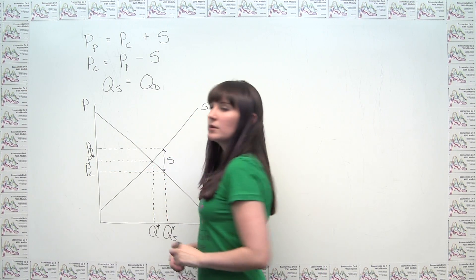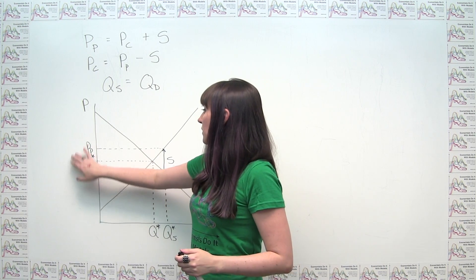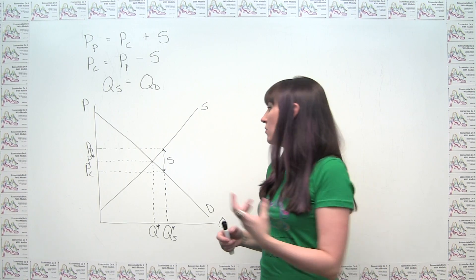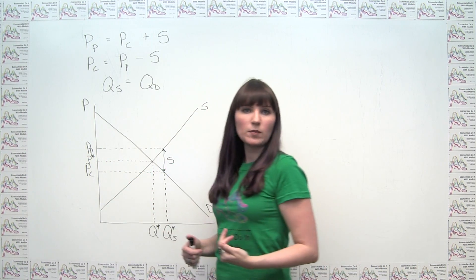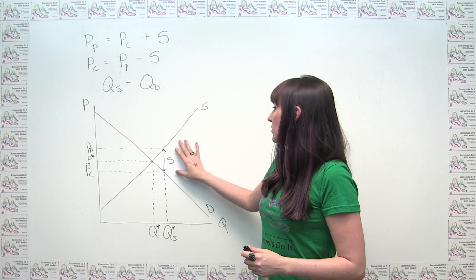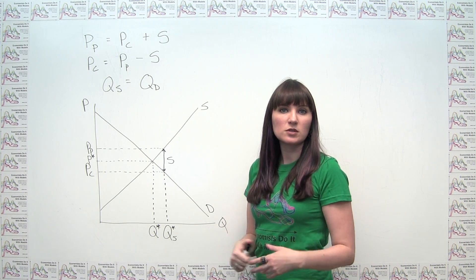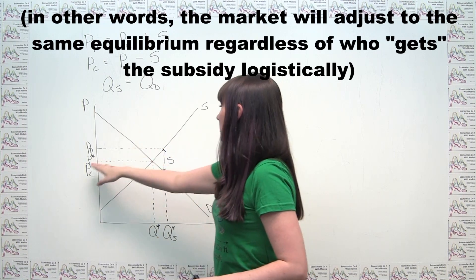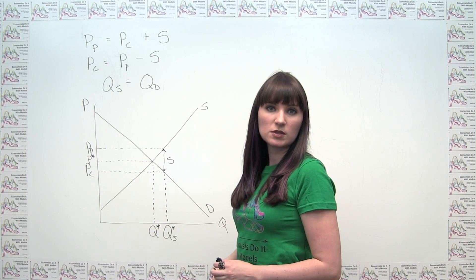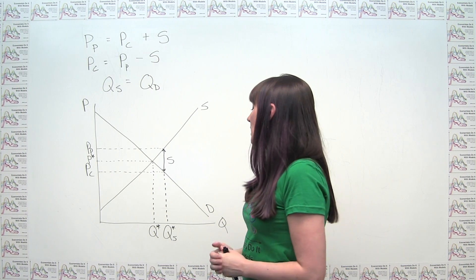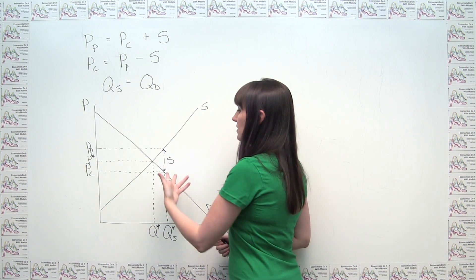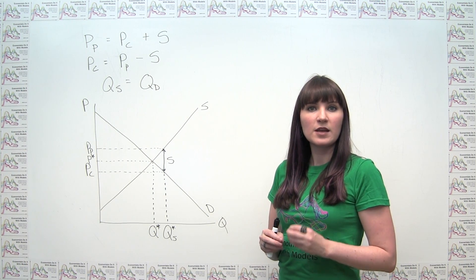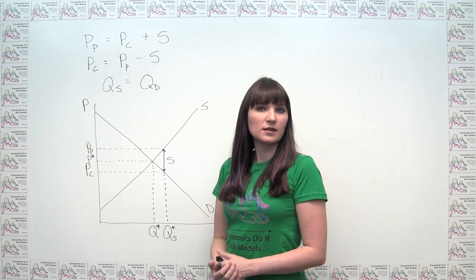That said, a subsidy is similar to a tax in that the producer and the consumer share the impact, or in this case, share the benefits, rather than the benefit only accruing to one party or the other. And that's going to be true regardless of whether the subsidy is given directly to producers or directly to consumers. And you'll note that the way we drew this, it looks like the benefits are evenly shared between producers and consumers, but this need not be the case. And again, like with the tax, the benefits of the subsidy, and whether they go mostly to producers or mostly to consumers, depends on the relative elasticity of demand and elasticity of supply.